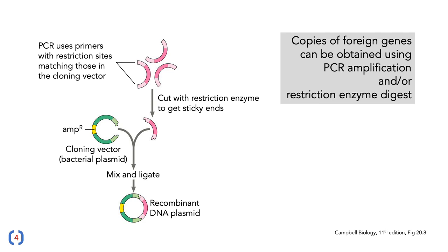How do you get copies of the foreign genes? They can be obtained in multiple ways, but a very common way is by PCR amplification. You can use primers for PCR that contain restriction sites matching those in the cloning vector, then cut your PCR products with a restriction enzyme to get the sticky ends. They can then be put into the cloning vector, mixed and ligated, to create a recombinant DNA plasmid.